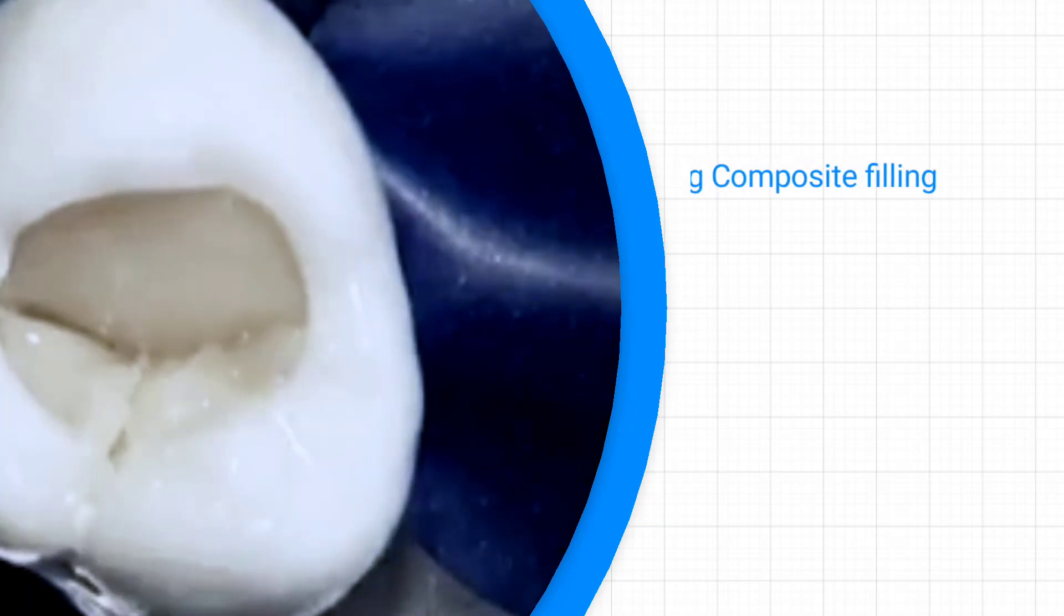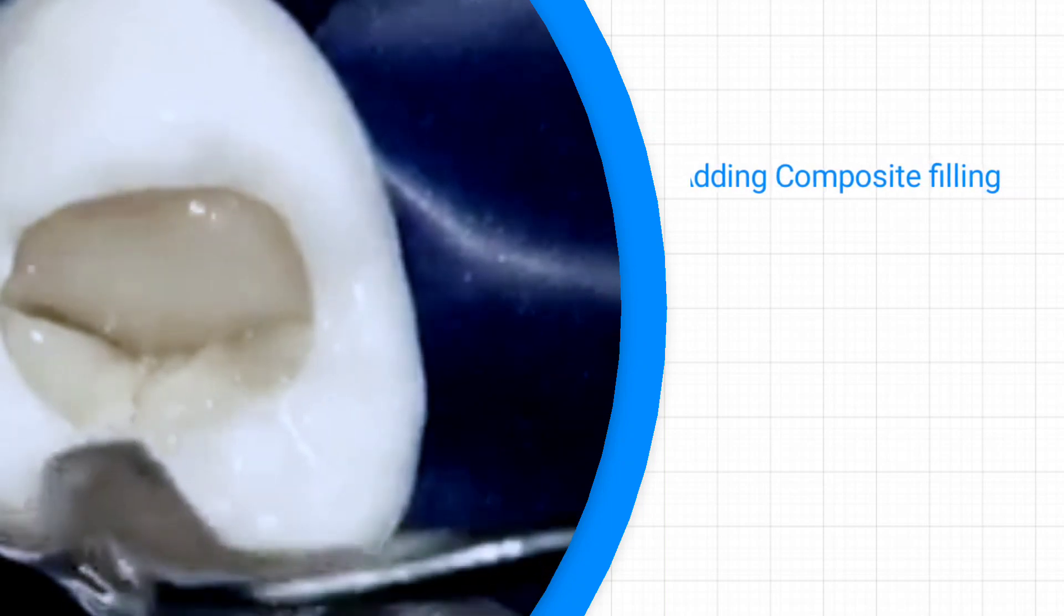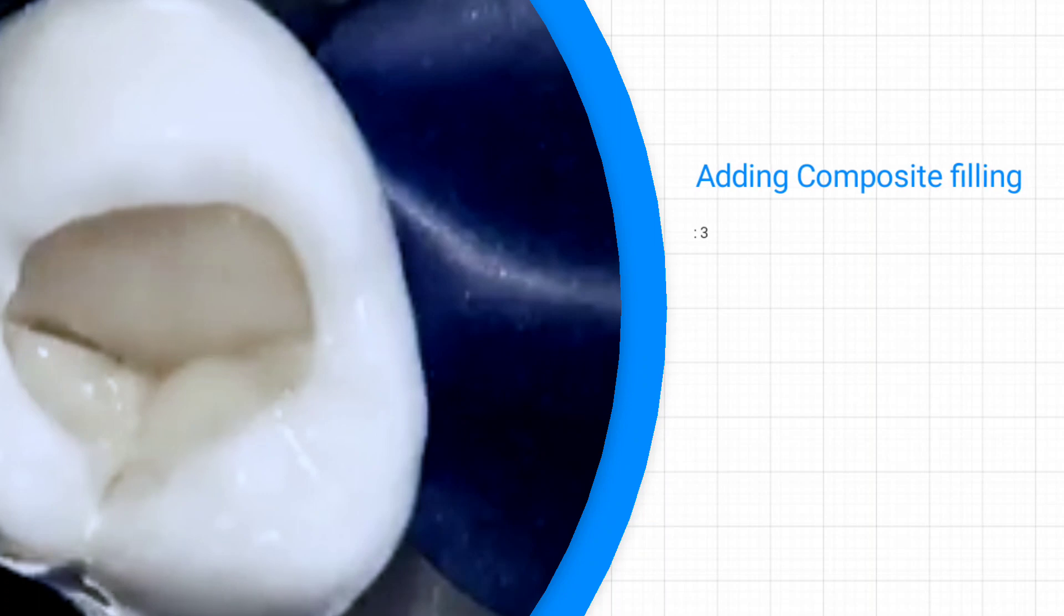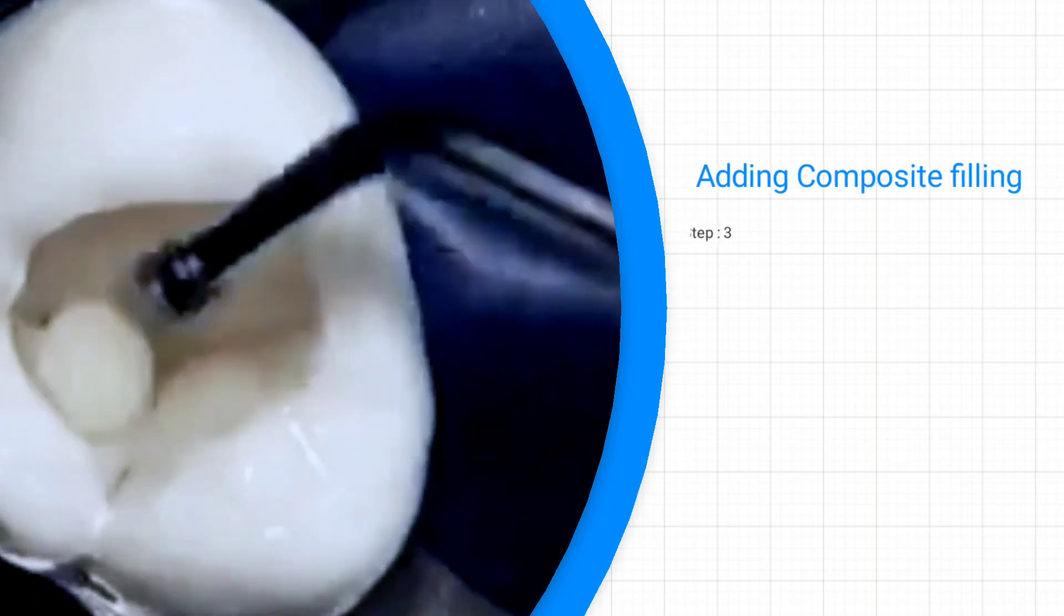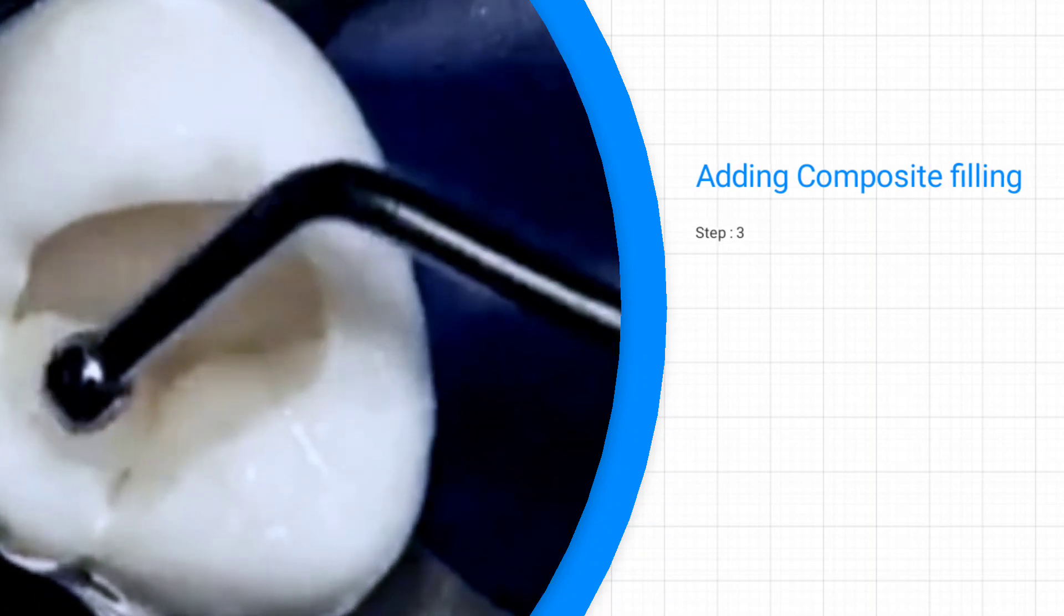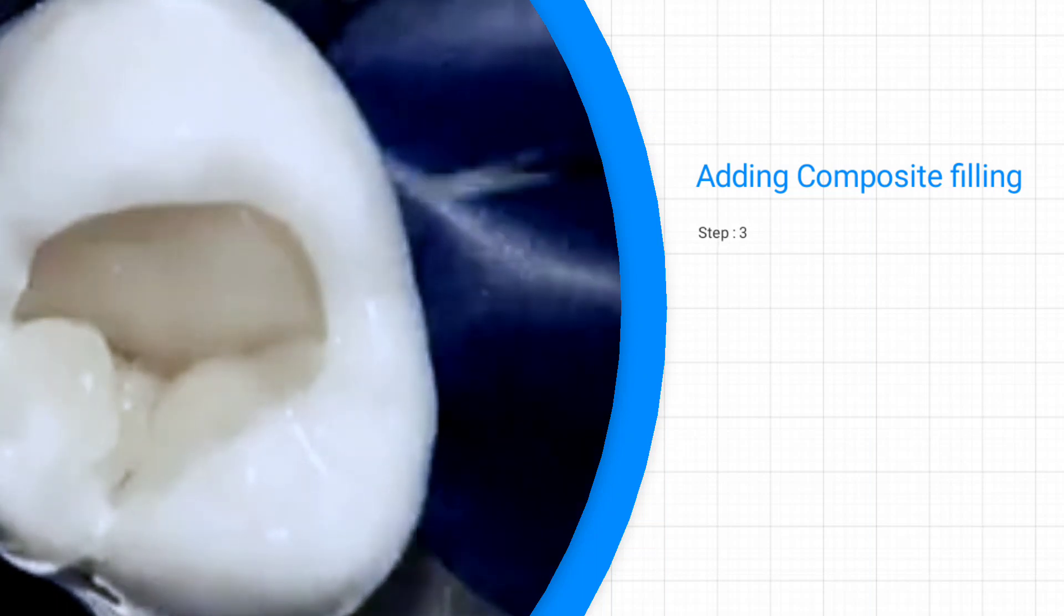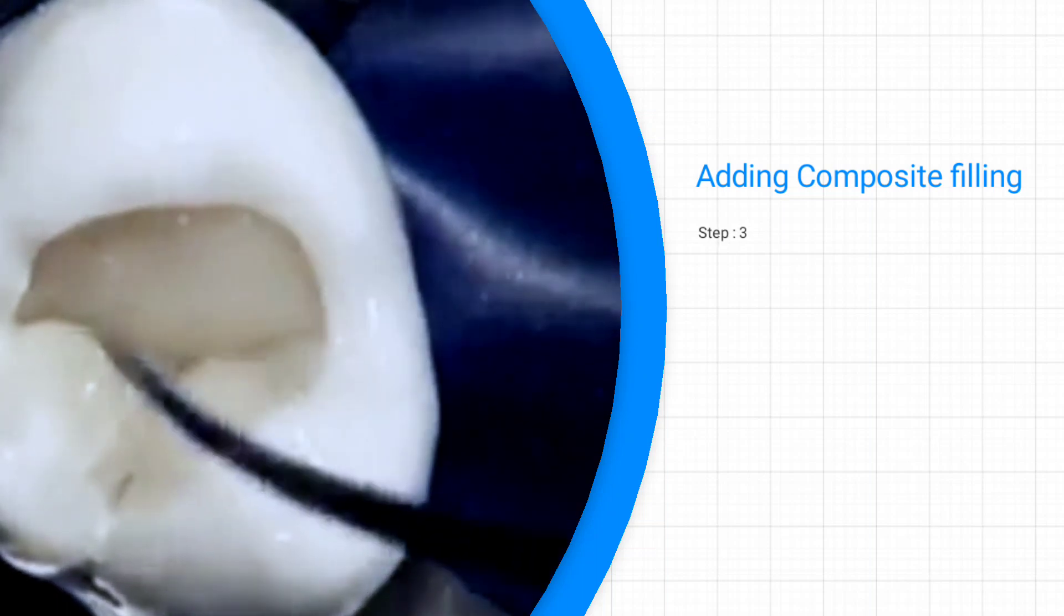Another reason has to do with the fact that the composite sets on a microscopic level—it shrinks, and this shrinkage is known as polymerization shrinkage. Keeping each layer thin helps us to keep the cumulative effect of this distortion to a minimum level. So instead of using a single lump, place and cure in addition of layers.